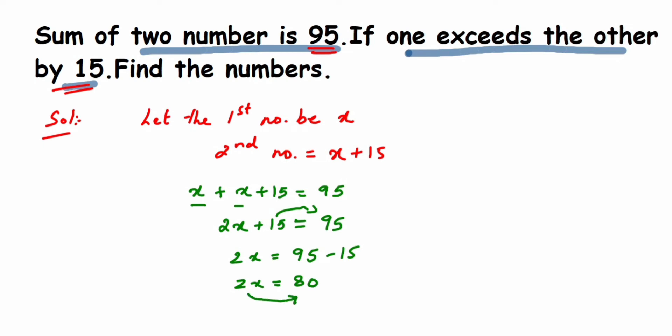Now we're going to take this 2 to the other side. But 2 is in multiplication with x, so when you take it to the other side it comes in division. So x equals 80 divided by 2. We got the first number which is equal to 40.